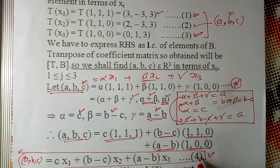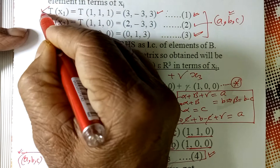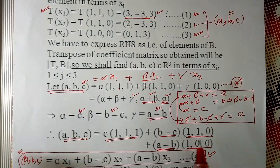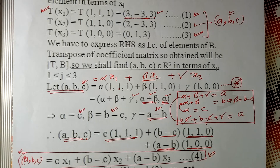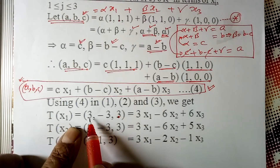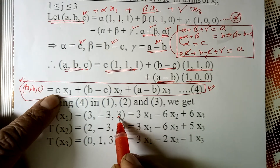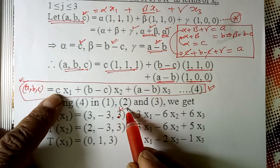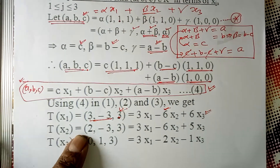Using equation 4, we now express TX1 = (3, minus 3, 3) in basis terms. Here A=3, B=minus 3, C=3. So C·x1 = 3x1; B minus C = minus 3 minus 3 = minus 6, giving minus 6·x2; A minus B = 3 plus 3 = 6, giving 6·x3. Therefore TX1 = 3x1 minus 6x2 plus 6x3.